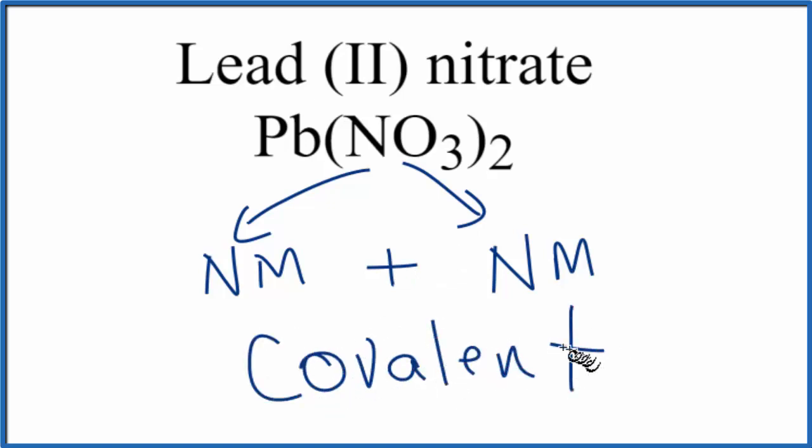When we have a non-metal plus a non-metal, we have a covalent compound. This is also called a molecular compound. So the bond between the nitrogen and the oxygen atoms, these bonds here, will be covalent.